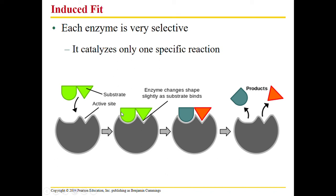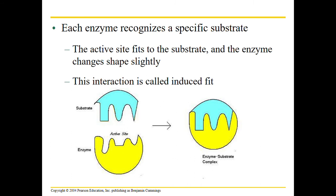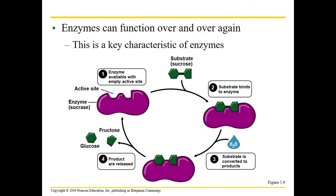Once the substrate binds at the active site, we get our products. Notice that the enzyme returns to its original shape — no parts of the enzyme come off — and this enzyme can catalyze this reaction millions of times. When the substrate and enzyme are together, we call it the enzyme-substrate complex. This can happen over and over again.